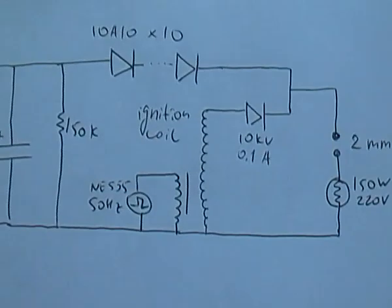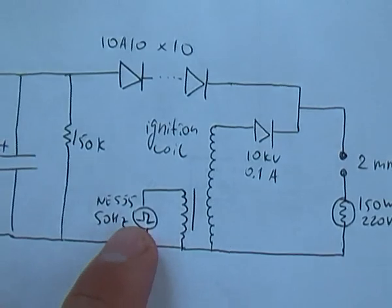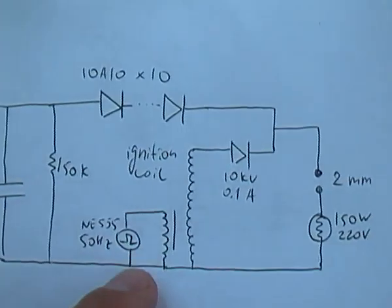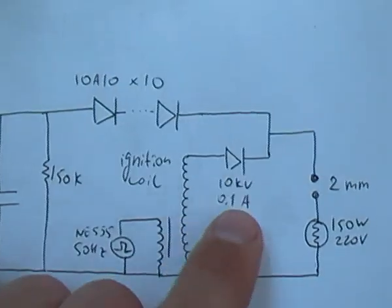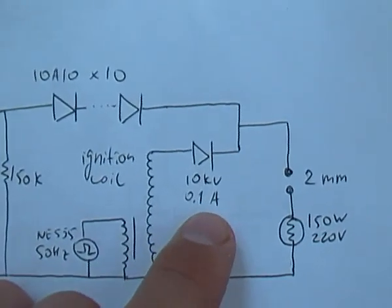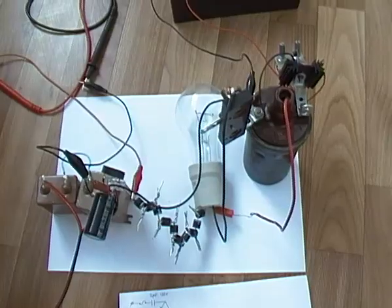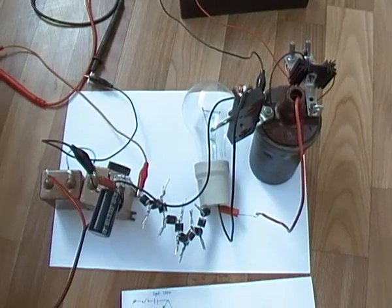The second part is high voltage power supply, basically an ignition coil driven by a 555 timer and also I have here 10 kilovolts 0.1 ampere diode. Okay, this is it. Now let me show you the circuit in action.